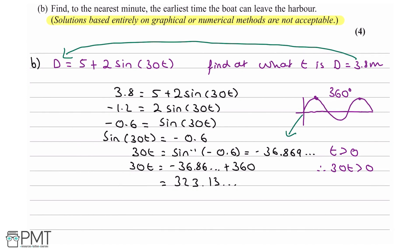If we solve for t, this means we can say t equals 323.13 over 30, which equals 10.77 hours.